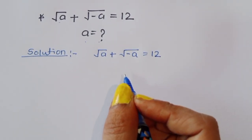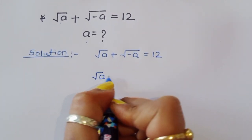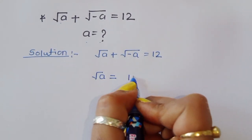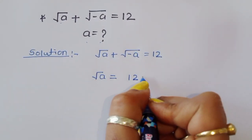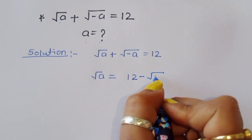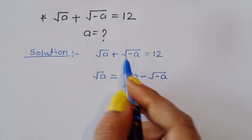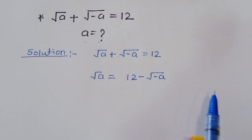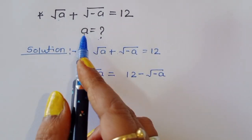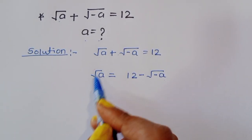We can rearrange: √a = 12 − √(−a). Now we have to find the value of a, so we will take a square on both sides to remove the square root.